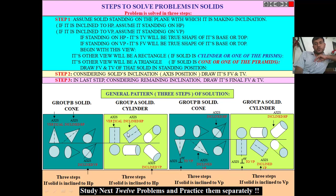There are two different cases given for two types of solids: pyramid-type solids and prismatic solids. The first two cases apply when the solid is inclined to the horizontal plane. The cone inclined to HP and the cylinder inclined to HP are shown, followed by the cone inclined to VP and the cylinder inclined to VP.